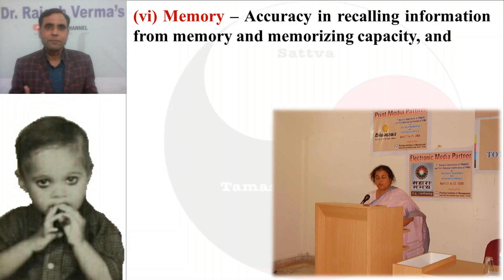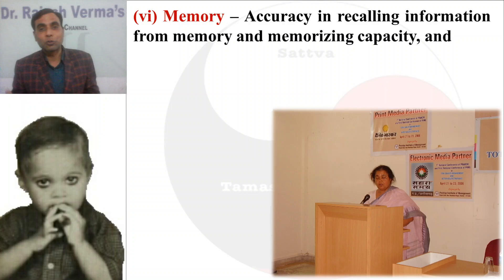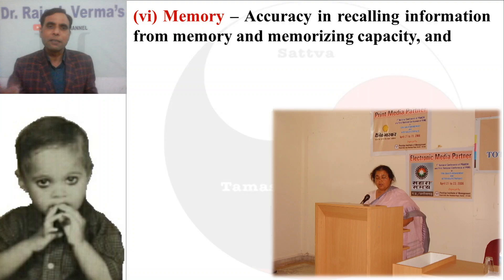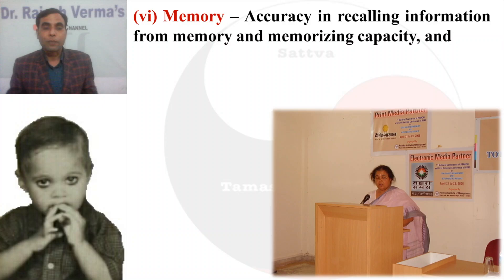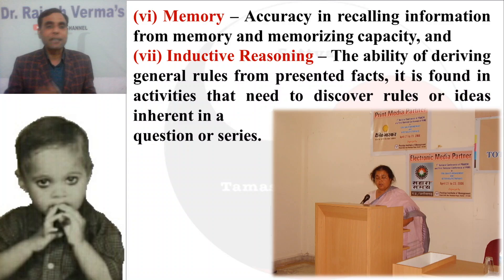The sixth is memory. Memory means receiving information, processing it, storing it, and subsequently, whenever required, recalling that information. The main point is accuracy in recalling the information. We receive large amounts of information daily, but it doesn't mean we memorize everything. The ability and accuracy in recalling information from memory is the sixth primary mental ability that is a component of intelligence suggested by L.L. Thurston.